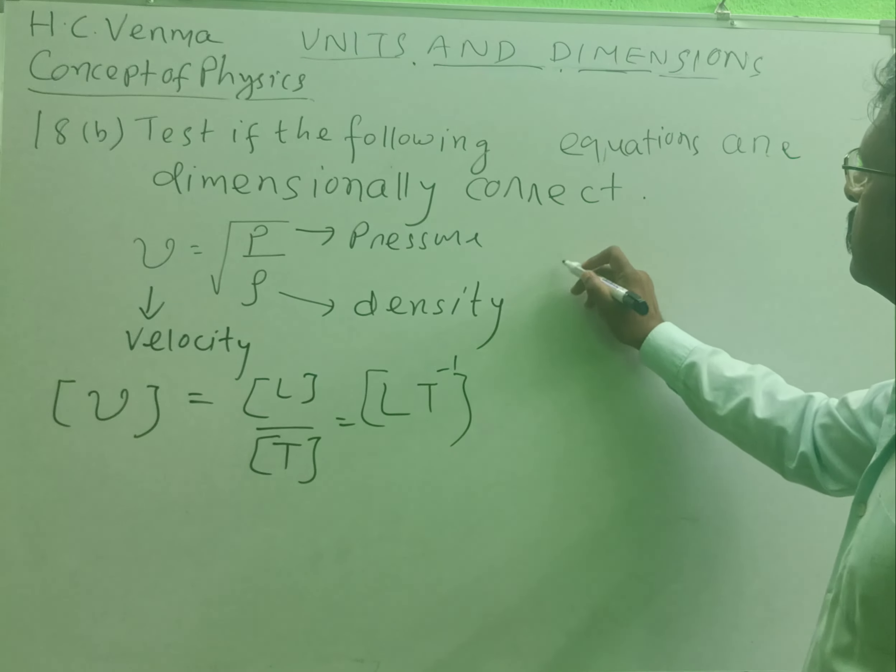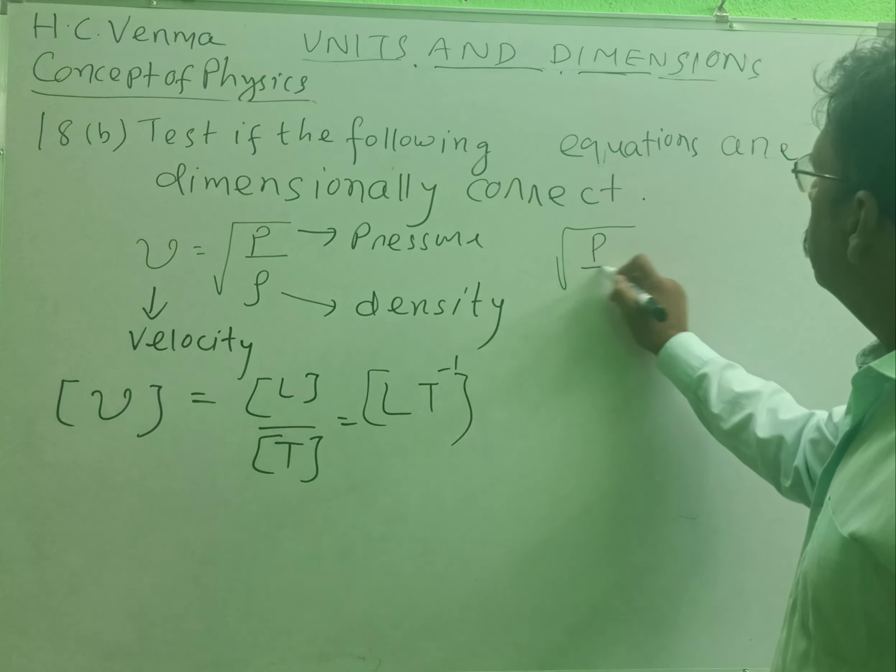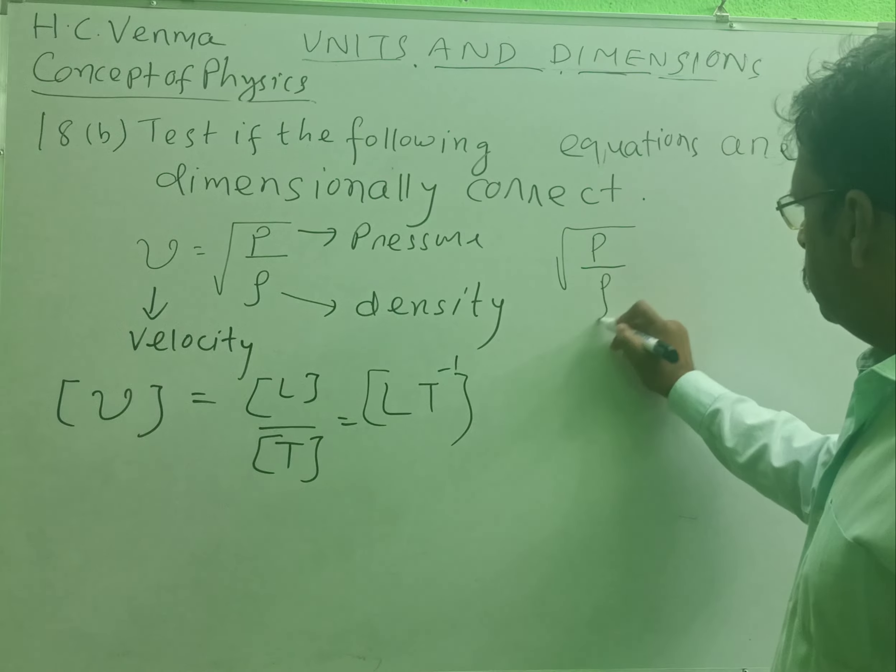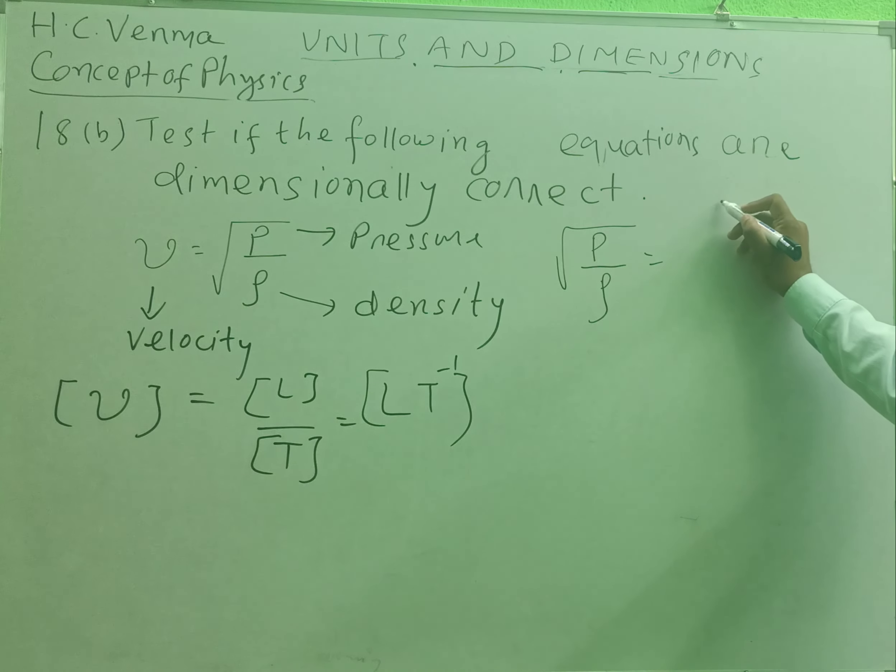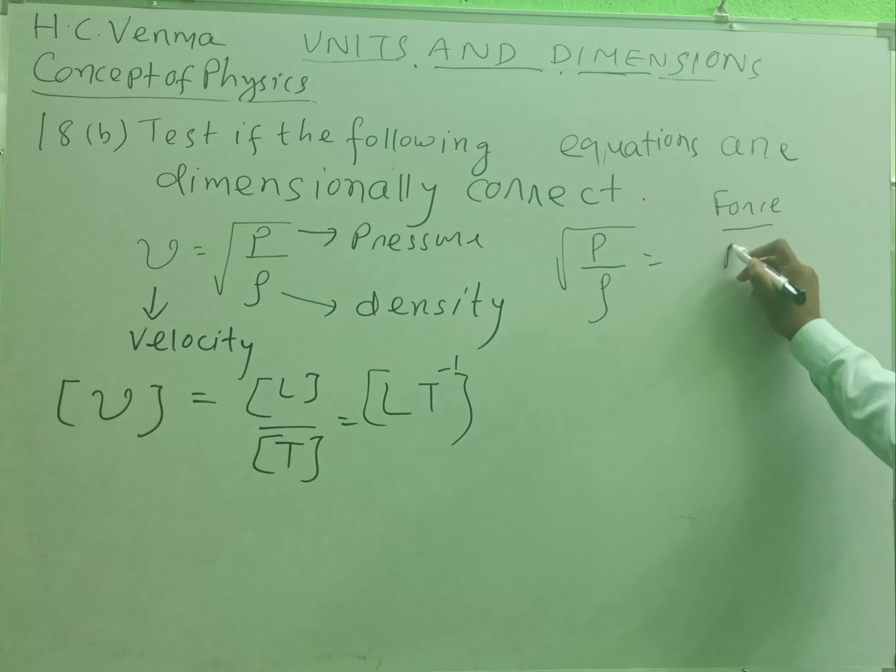What are the dimensions of root over P by rho? P is pressure, and pressure is force by area. What is rho density? It is mass by volume.